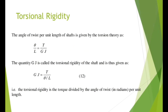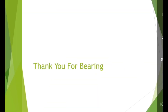Torsional rigidity: the angle of twist per unit length of the shaft is given by the torsion theory as theta/L = T / (GJ). The quantity GJ is called the torsional rigidity of the shaft, given as GJ = T / (theta/L). Torsional rigidity is the torque divided by the angle of twist in radians per unit length.